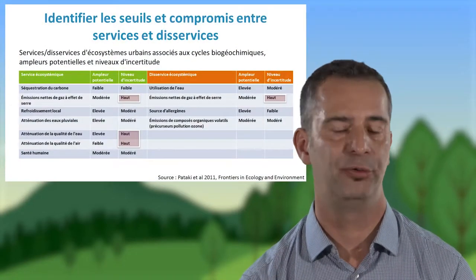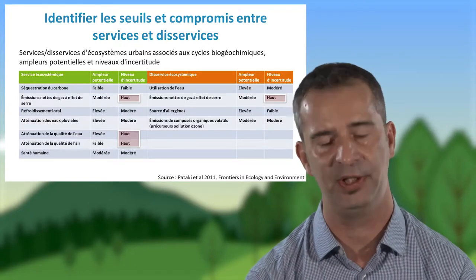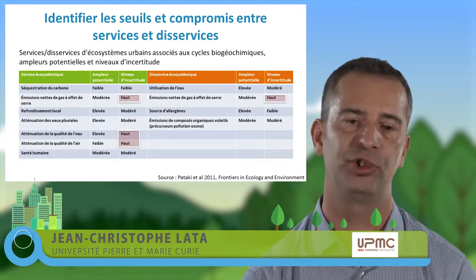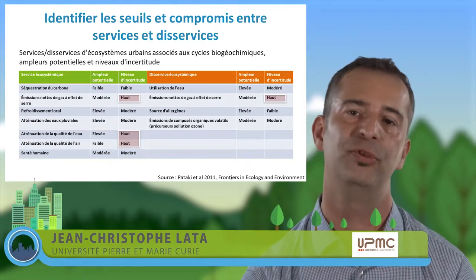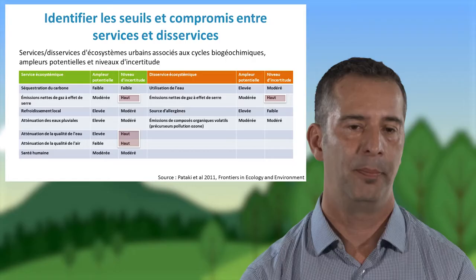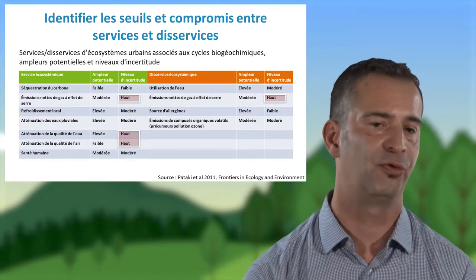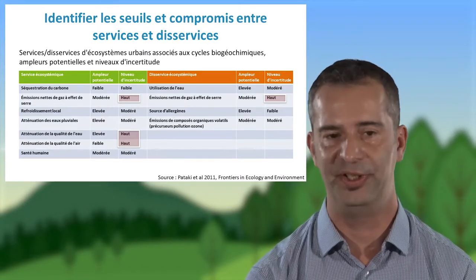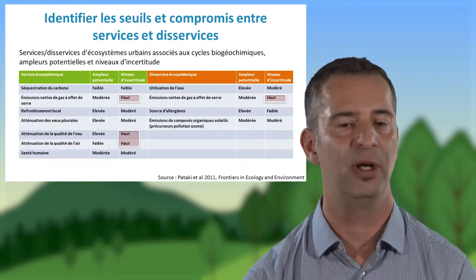Le deuxième point porte sur les seuils et compromis entre services et disservices. Des chercheurs ont regardé des services focalisés autour des cycles bio-géochimiques et ont remarqué que l'amplitude sur laquelle on peut jouer peut dépendre des services — elle peut être faible ou forte. Mais également, le niveau d'incertitude de la connaissance scientifique peut être faible ou important. En particulier, les émissions de gaz à effet de serre, qui sont à la fois des services et des disservices, présentent un niveau d'incertitude fort, ce qui appelle à plus d'études scientifiques.